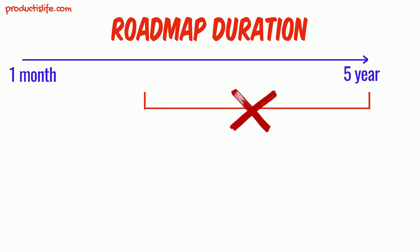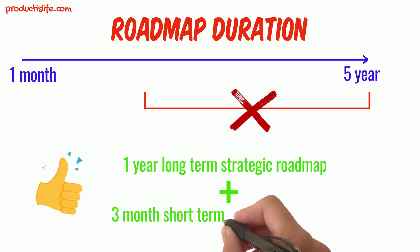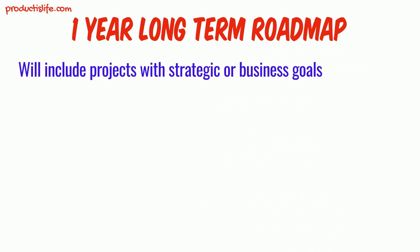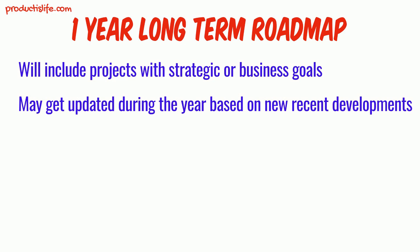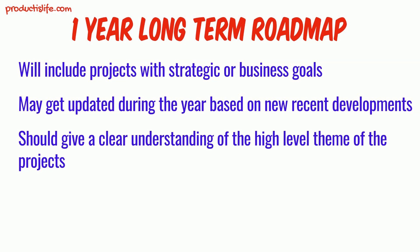There may be very few select industries like manufacturing or healthcare where a 5-year roadmap makes more sense, as they involve high upfront R&D cost in both time and money. I personally prefer to have a 1-year roadmap for long-term strategic goals and a 3-month roadmap for short-term execution goals. The long-term roadmap would include projects with strategic or business goals, and you don't need to lay out the complete final details yet, as it may keep evolving throughout the year based on new developments. But it should give a clear idea of the theme or kind of projects you want to focus on strategically.